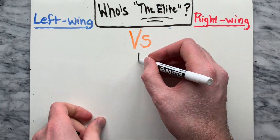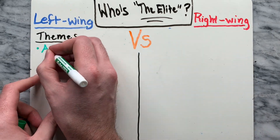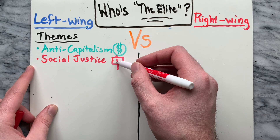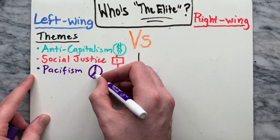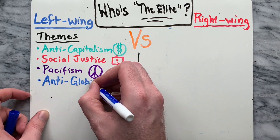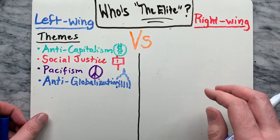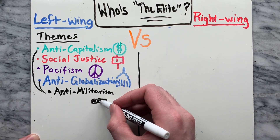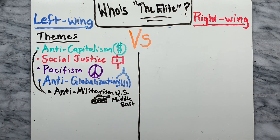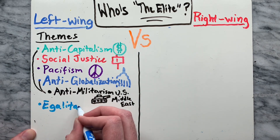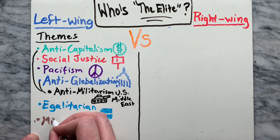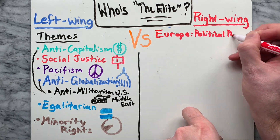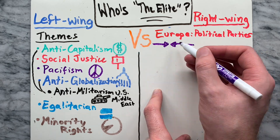This leads us to looking a little bit deeper into their fundamental beliefs. Important themes for left-wing populists usually include anti-capitalism, social justice, pacifism, and anti-globalization. The criticism of capitalism and globalization is linked to anti-militarism, which has increased in left populist movements as a result of United States military operations, especially those in the Middle East. Lastly, the populist left relies on egalitarian ideals — the principle that all people are equal — as well as supporting minority rights.